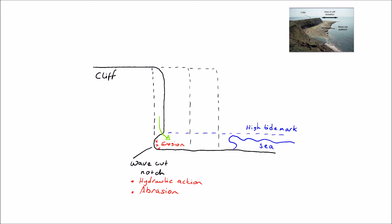You can see here that I'm marking the previous extent of the cliff — this is where it used to extend to until it was undercut and eroded away. And this is the direction of cliff retreat. The cliff has retreated backwards and will continue to retreat backwards as long as the base is eroded.